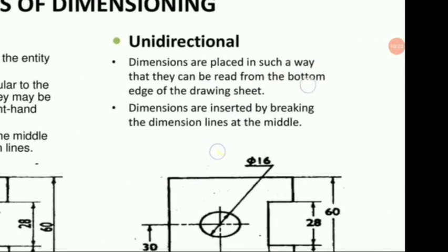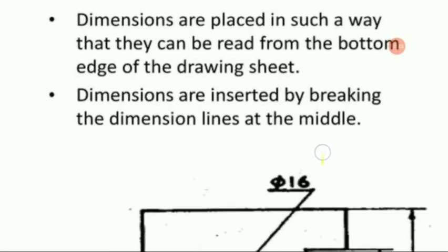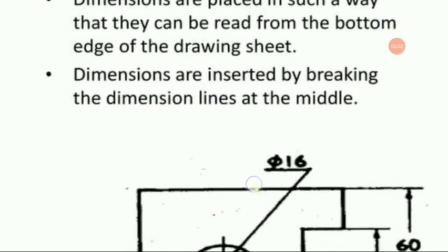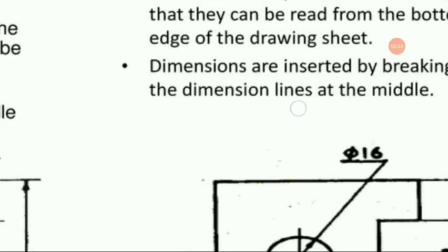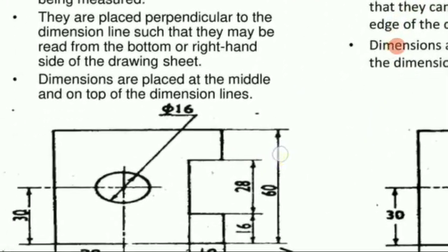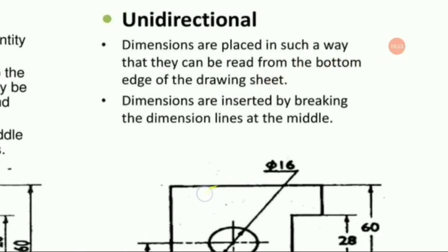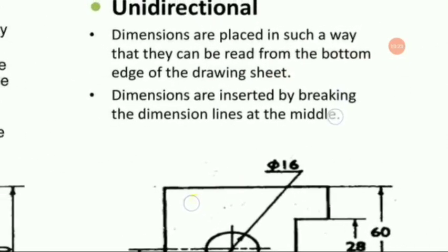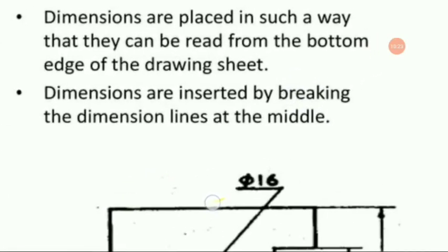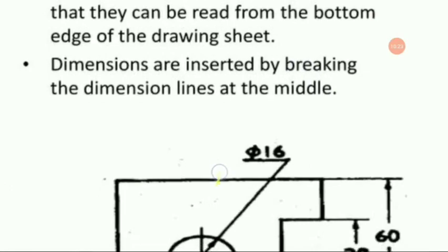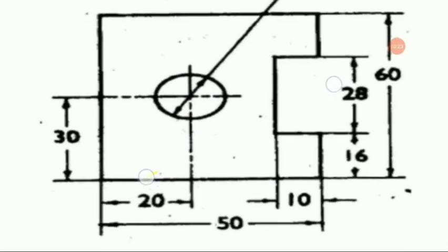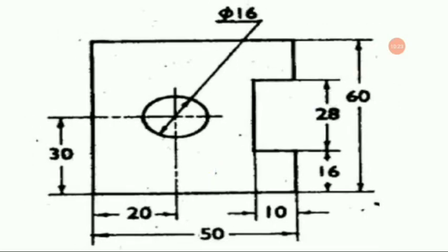Next is the unidirectional system, which is also very important. In the unidirectional dimensioning system, dimensions are placed such that they can be read from the bottom edge of the drawing sheet. Previously in the aligned system, dimensions could be read from the bottom or right-hand side. The main difference is that in the unidirectional system, dimensions are inserted by breaking the dimension lines at the middle.